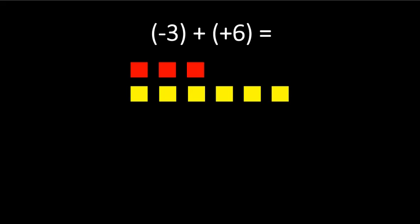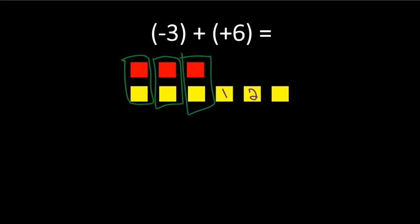So we have all the tiles drawn in. Remember, whenever we have a yellow tile and a red tile together, we always make a zero pair. One yellow tile and one red tile make one zero pair — so here is our first zero pair, second zero pair, third zero pair. Now we simply count how many tiles we have left: 1, 2, and 3. We have 3 yellow tiles, and yellow means positive, so negative 3 plus positive 6 is positive 3.